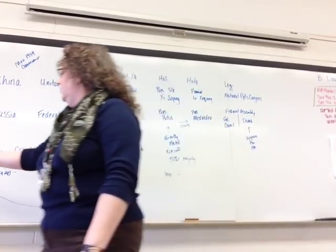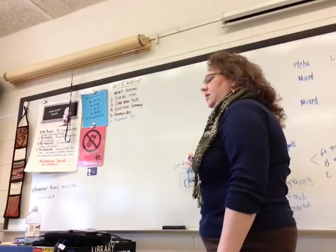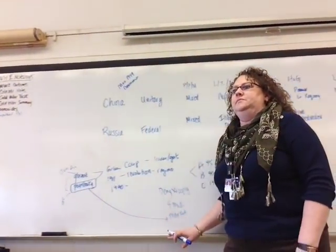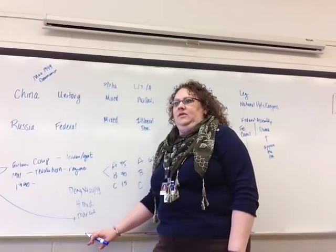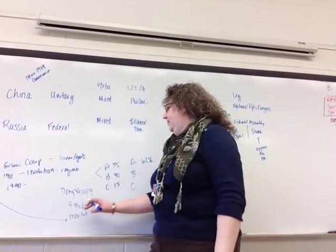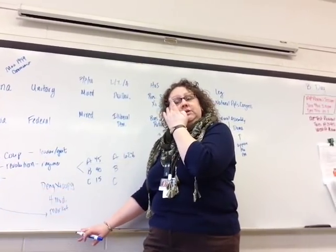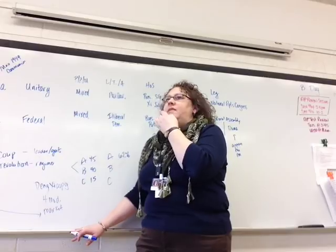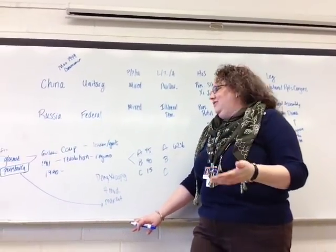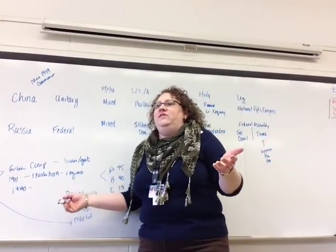Glasnost is having democracy and freedom of speech; perestroika is having capitalism. Deng just wanted to build up the economy — he wasn't worried about giving people rights. An example of him crushing rights is Tiananmen Square when they killed people who were protesting. What happens as a result of allowing those freedoms? The Soviet Union collapses. That's a big part of the discussion — is China going to collapse? China is not allowing that freedom the way the Soviet Union did.